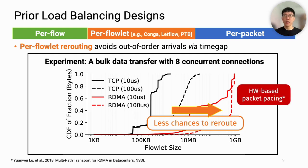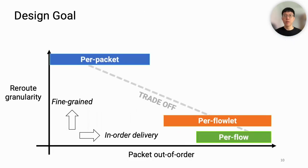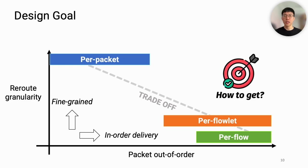This is mainly because TCP uses batch processing for I/O optimization, while RDMA uses hardware-based packet pacing. To recap, we find a common trade-off between rerouting granularity and the amount of out-of-order packets in the context of RDMA. So how can we catch two rabbits: fine granularity and in-order packet delivery?